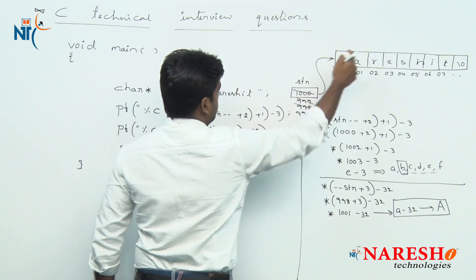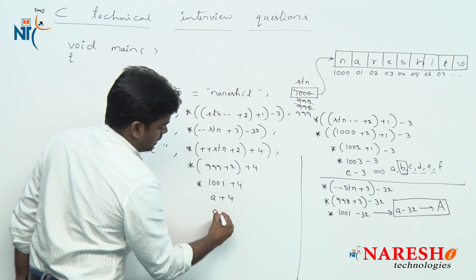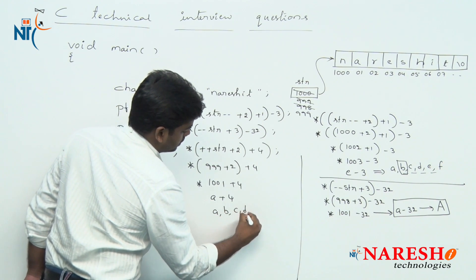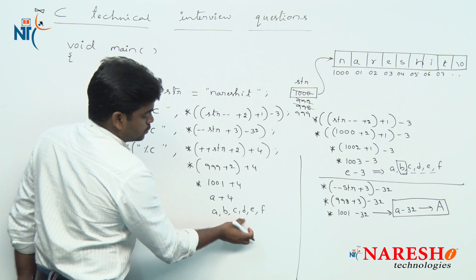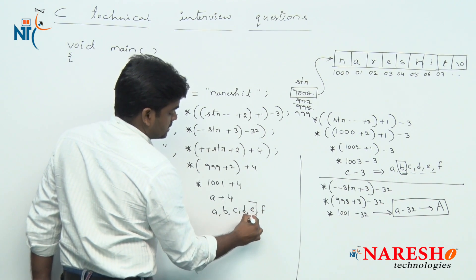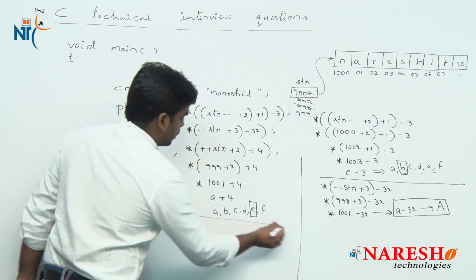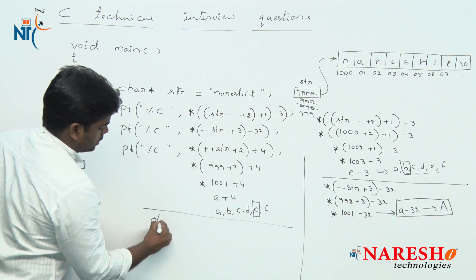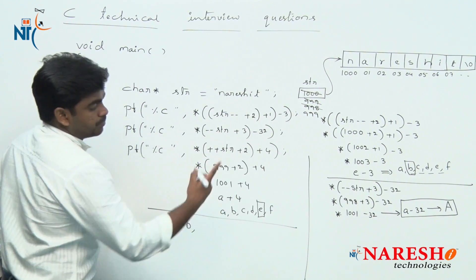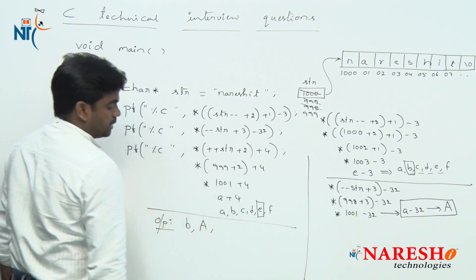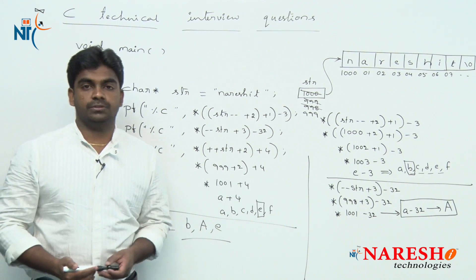Pointer to 1001 is 'a', and a plus 4: a, b, c, d, e — plus 1, plus 2, plus 3, plus 4. So the result is 'e'. The output of all three expressions is: first is small 'b', second is capital 'A', third is small 'e'.